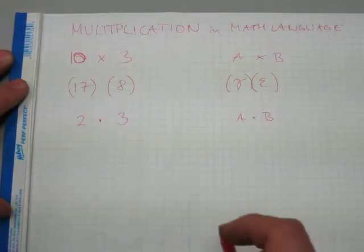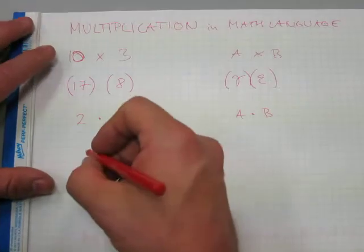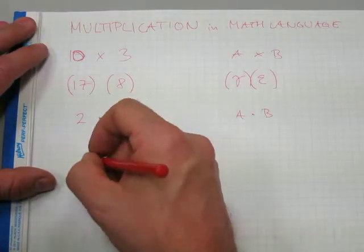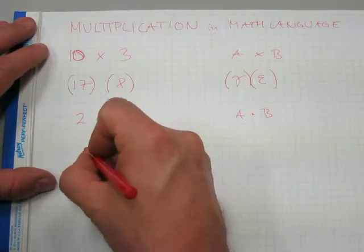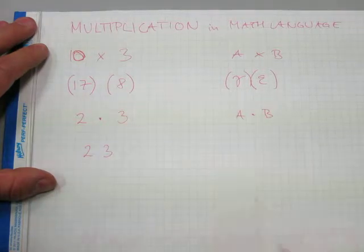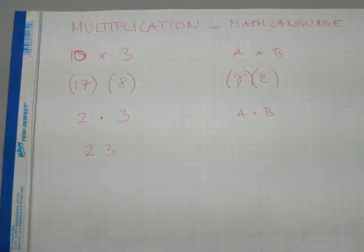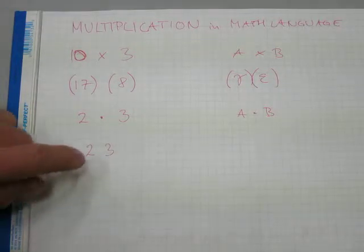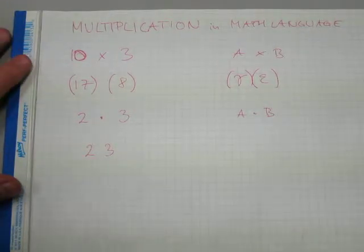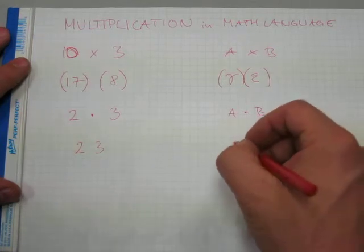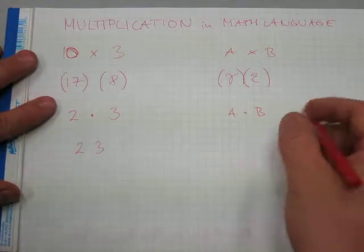And lastly, you can write multiplication with nothing in between. Now if you only have numbers, this is really confusing and is not used with numbers—it's only used with letters in formulas.